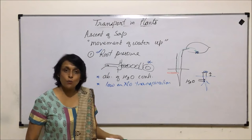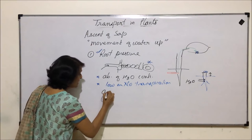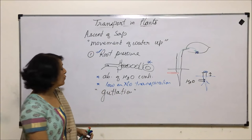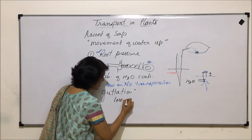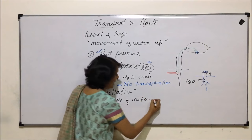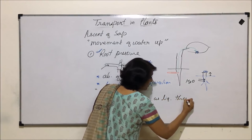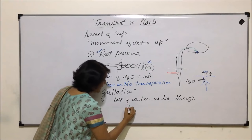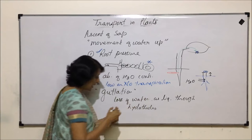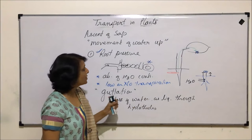There is one more situation related to root pressure, known as guttation. Guttation is the loss of water in the form of liquid water through structures called hydathodes. Hydathodes are the openings present at the leaf margin.